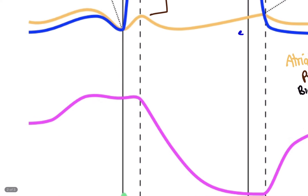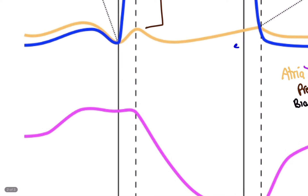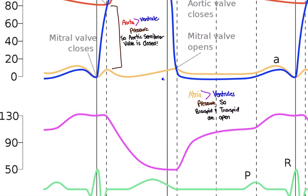Notice that we're increasing in ventricular volume — that's because the atria contracted. The ventricles are filling with blood, depicted by the increasing blood volume line. This is also evidenced on the EKG by the P wave. In that EKG video, we went over what the P wave, QRS complex, and T wave mean. This is evidence of electrical activity in the atria, which caused a contraction, which is evident by the increased amount of blood volume.